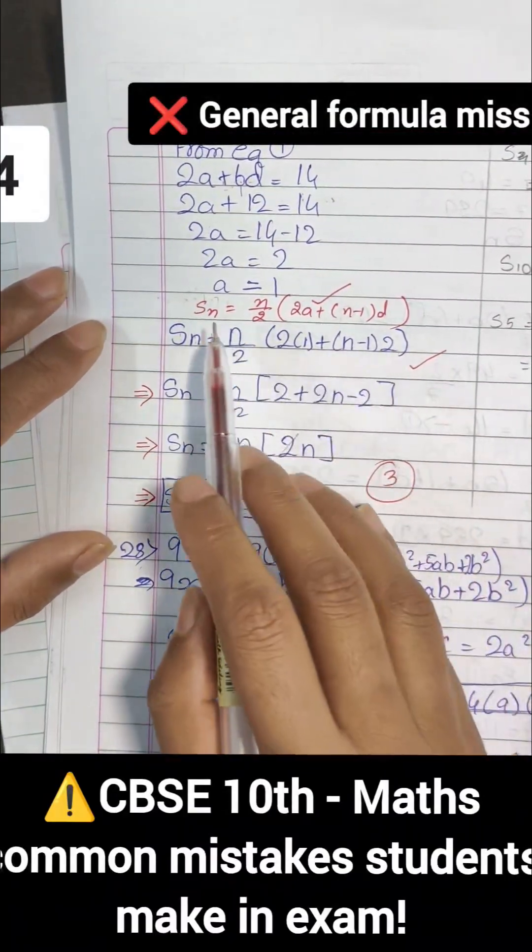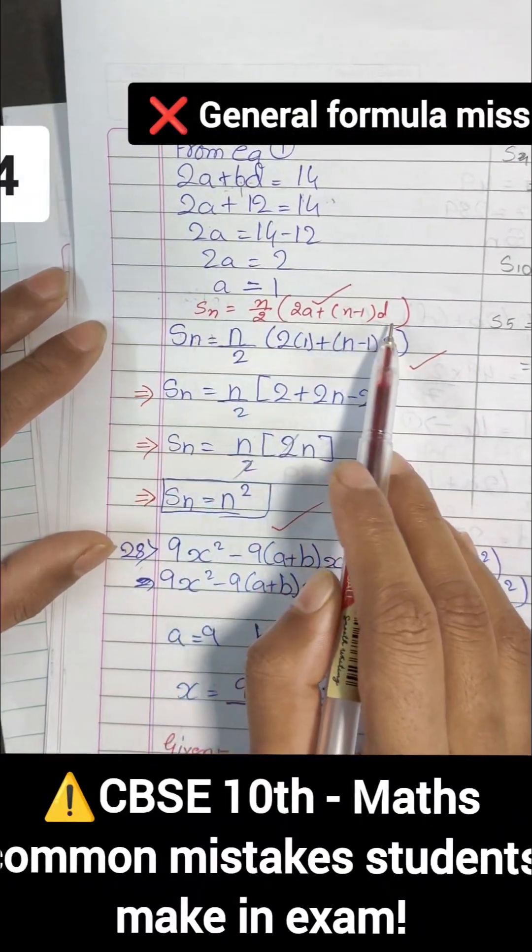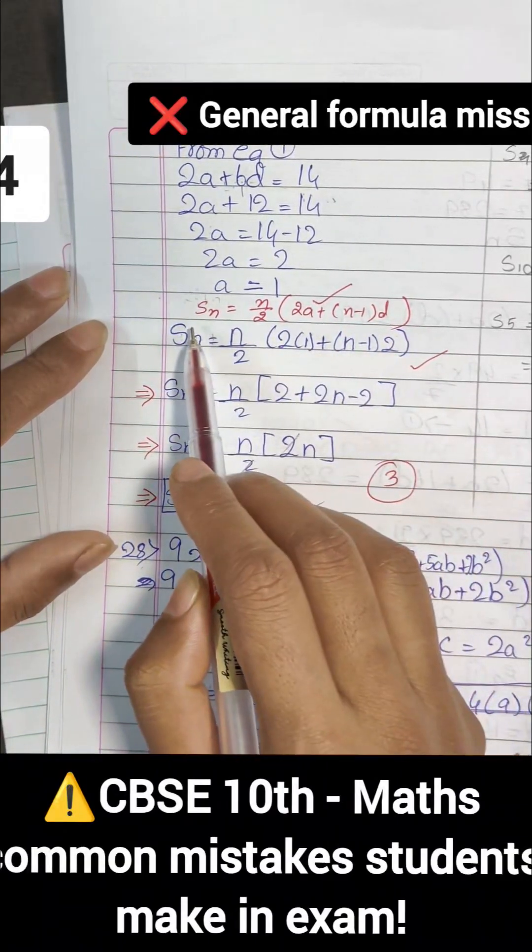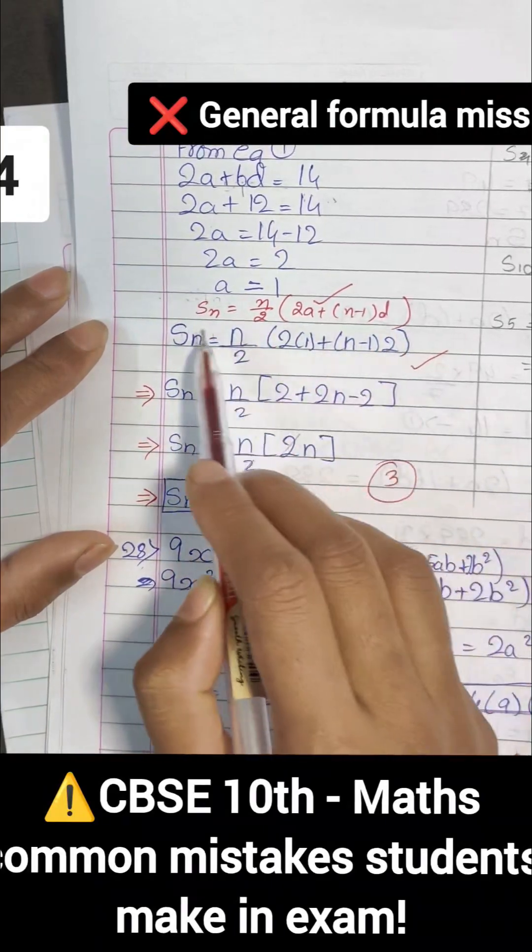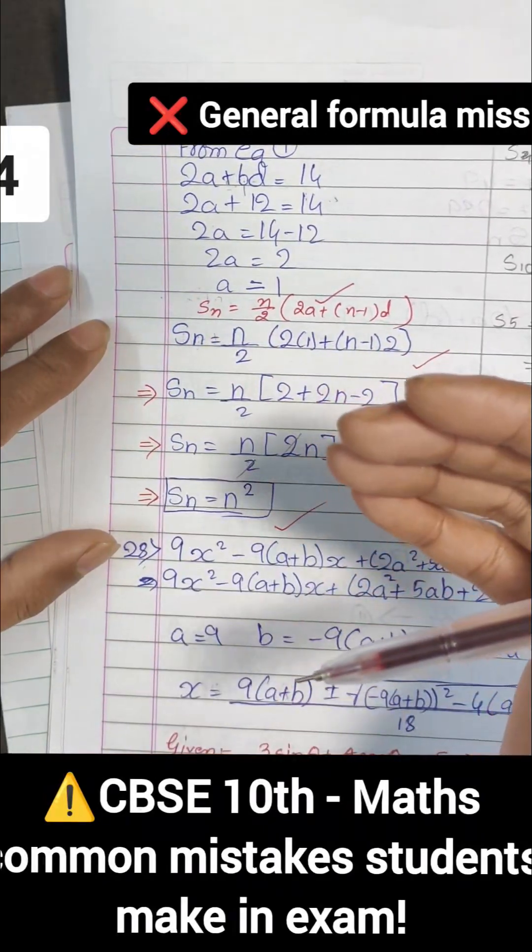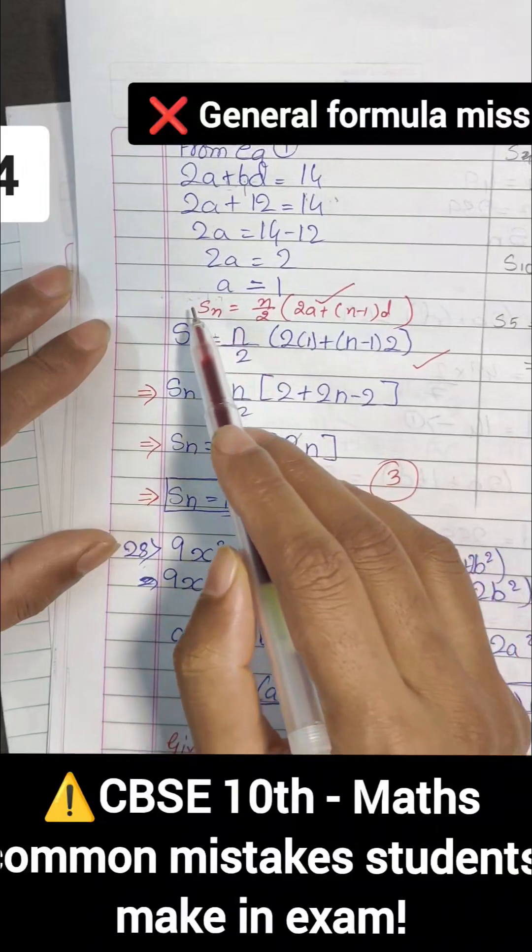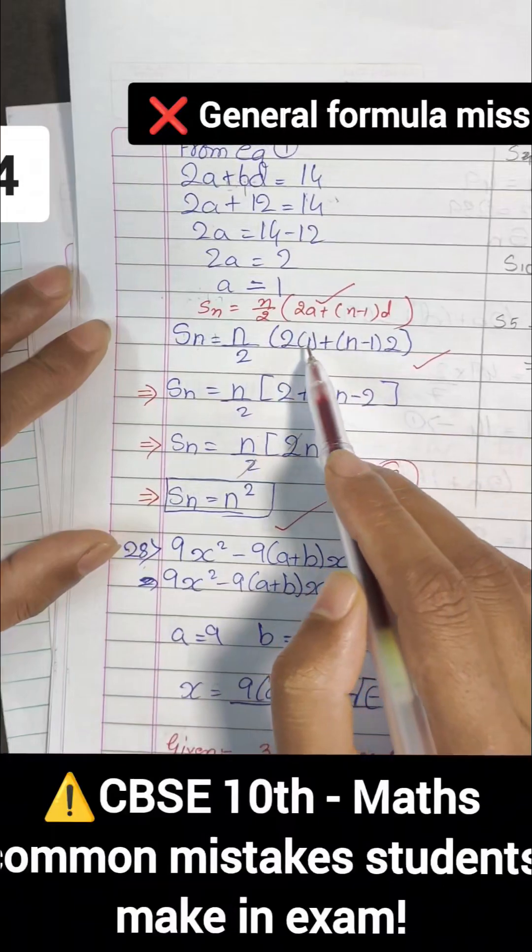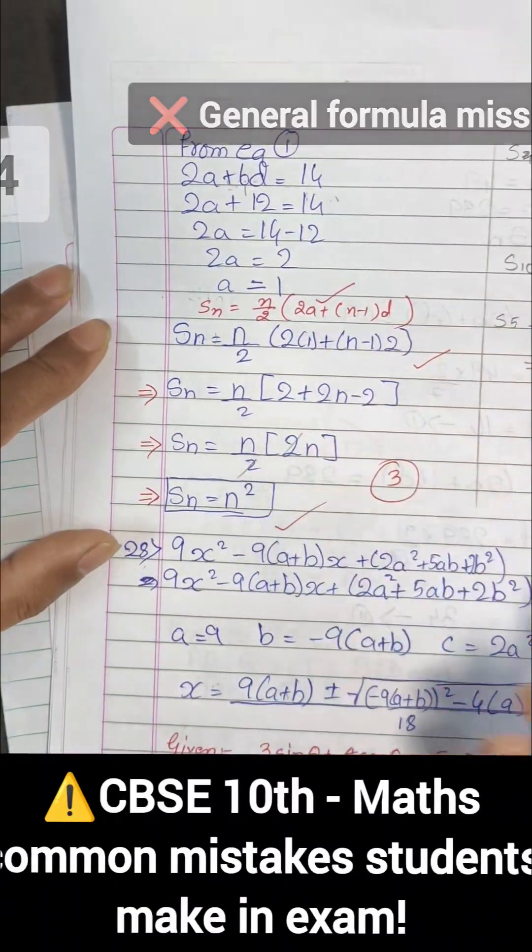Another common mistake is they usually forget to write the general formula and they start solving it. So make sure that when you are writing your solution in your board exam, you first write down the general formula. Because in board, for each and every step, marks are assigned. So make sure you write down the general formula also, and then you are proceeding and putting the values in it, and then you are solving it.